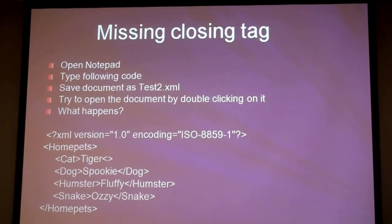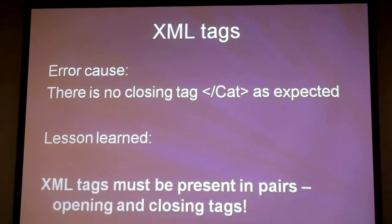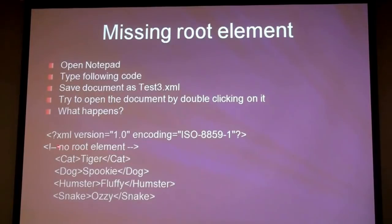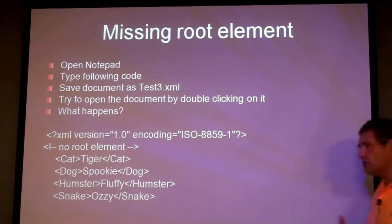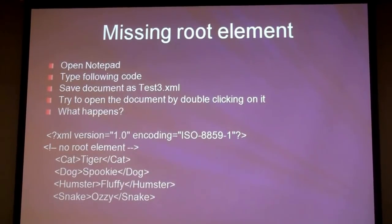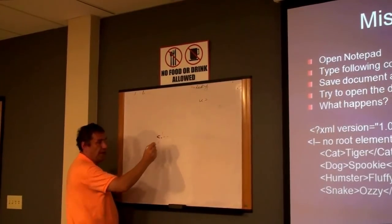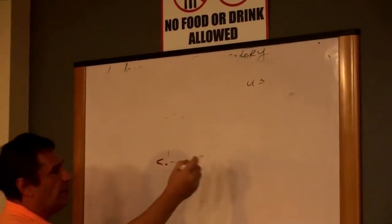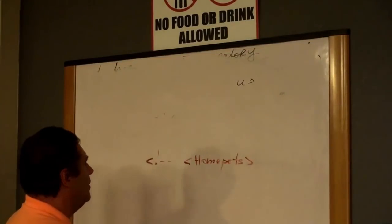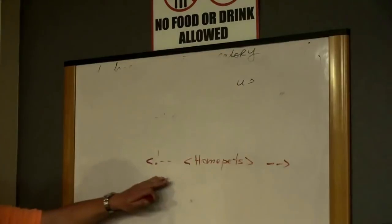After commenting out the root element and saving, the browser shows an error such as 'junk after document element.' Firefox may not pinpoint the exact error location — it might point to the wrong line. Don't fully trust the browser's error location, but if the browser detects an error, you must investigate. After removing the comment and restoring the root element, the document should display correctly with no problems.